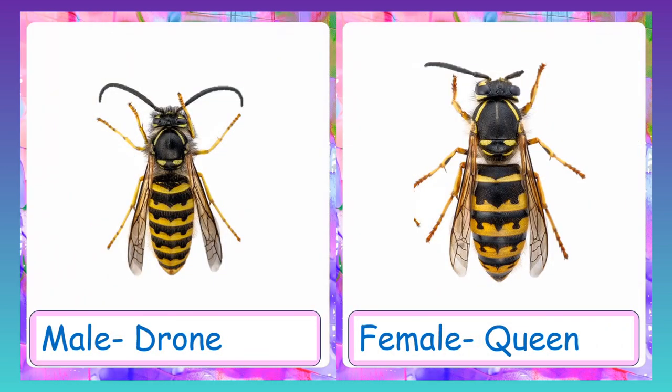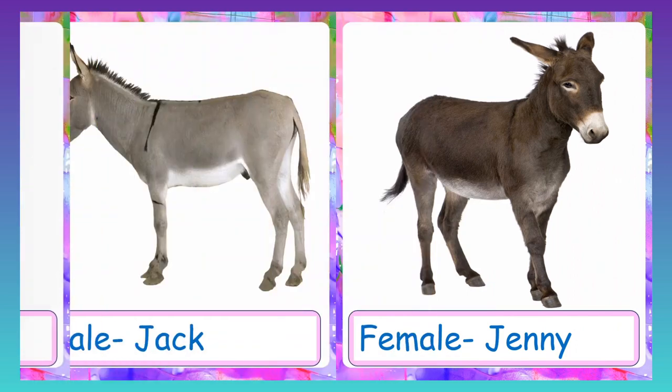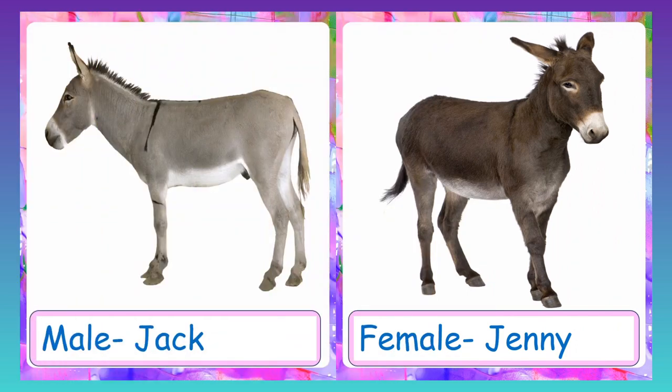Honey bees: male bee is called drone and female is called queen. Donkey: male donkey is called jack and female donkey is called jenny.